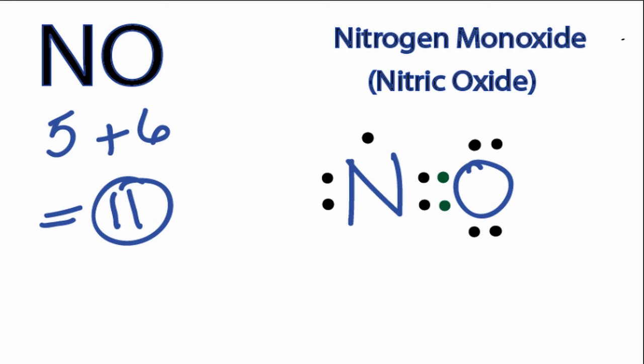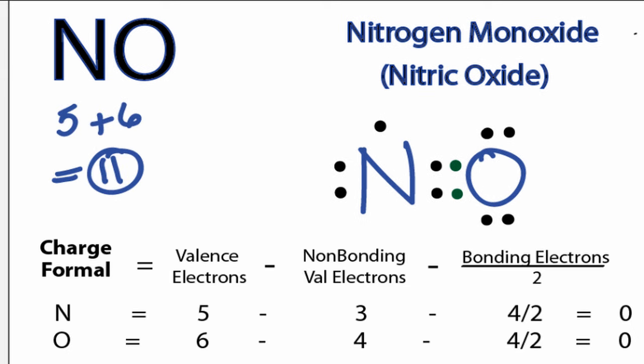Let's check the formal charges and see if they work. So as you can see, the formal charges for both the nitrogen and the oxygen are 0. That means that this is going to be the best Lewis structure for NO.